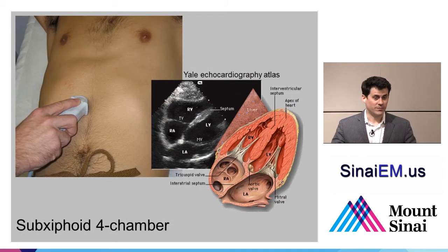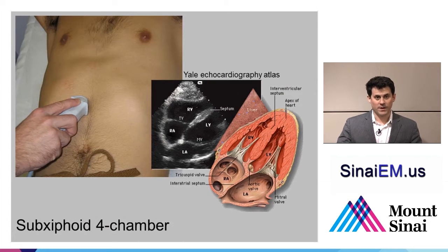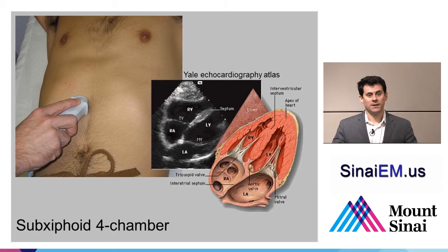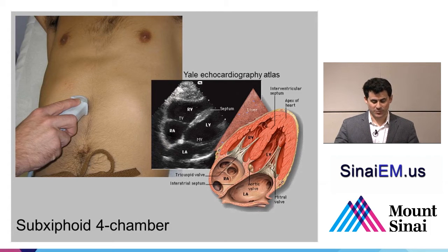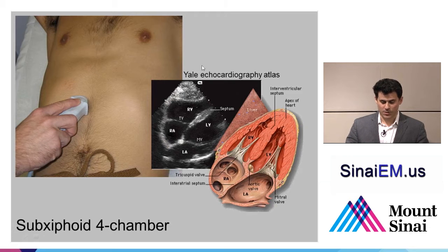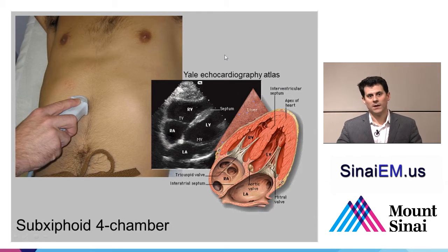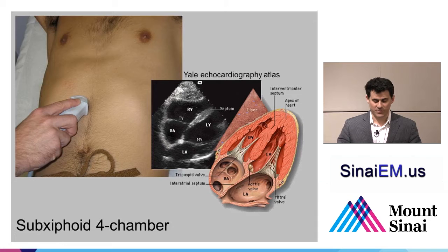The sub-xiphoid view means placing the probe under the xiphoid process, aiming for a four-chamber cardiac view — trying to address that plane through the sub-xiphoid approach. These images are courtesy of the Yale Echocardiography Atlas, which is an excellent resource online for anatomy, ultrasound clips, normals, and abnormals. Using any search engine to look for Yale Echocardiography Atlas, they have an incredible amount of content online.